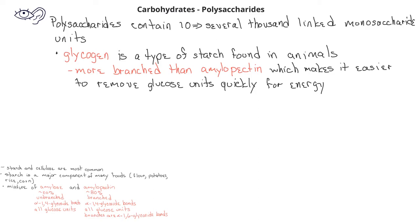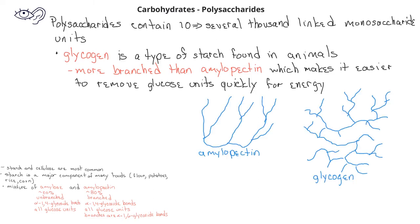This figure represents the difference between amylopectin and glycogen. We see that amylopectin does have branching side chains, but glycogen has many more shorter side chains. Because of this, there are many ends of the glycogen where a glucose unit can be easily removed.